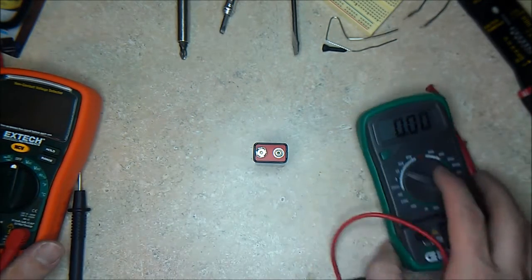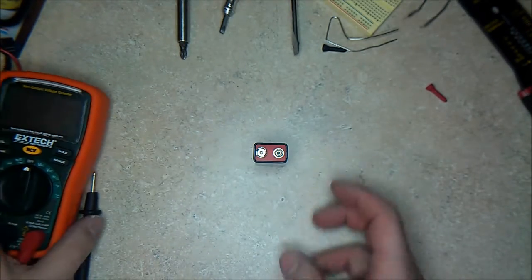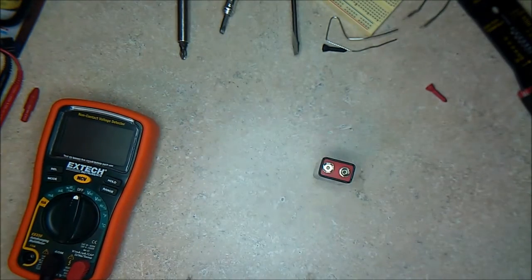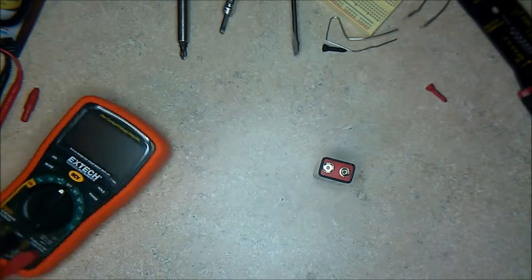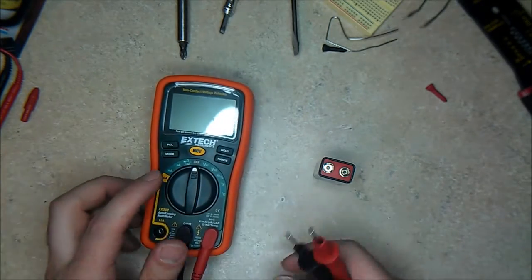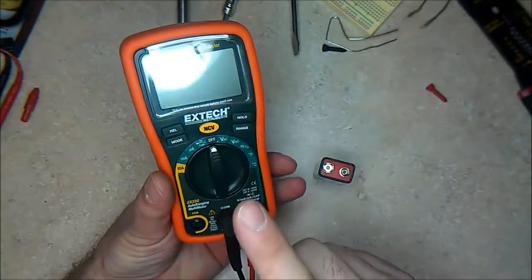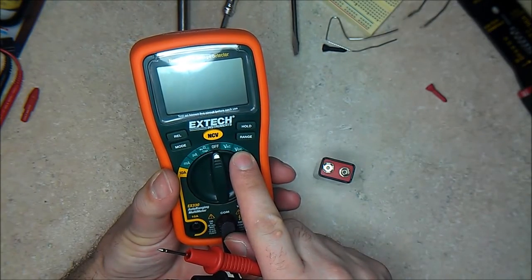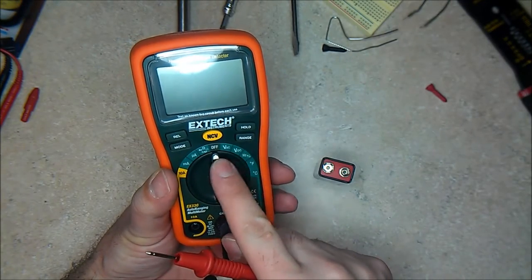What you want to get is stay away from all this and try to get something that's auto-ranging. Auto-ranging means that you don't have to select anything besides if what you're measuring is AC or DC.